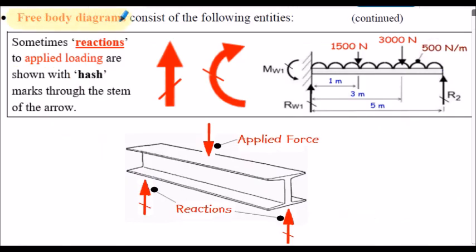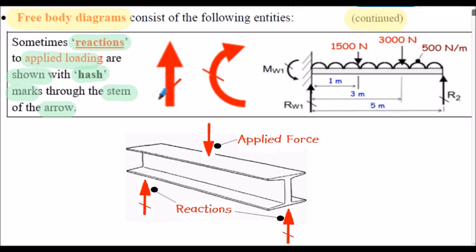Sometimes reactions to applied loading are shown with hash marks through the stem of the arrows. For example, considering this vertical force shown here, a hash mark through the stem indicates it's a reaction. For this moment or couple denoted by this curved arrow, here again is the hash mark denoting it's a reactive moment.